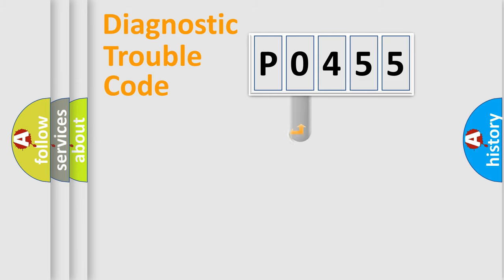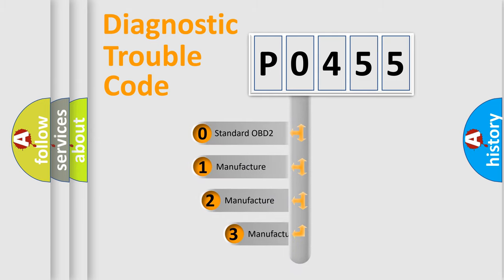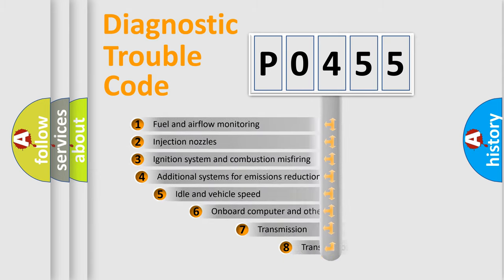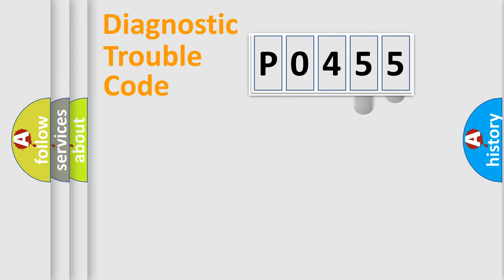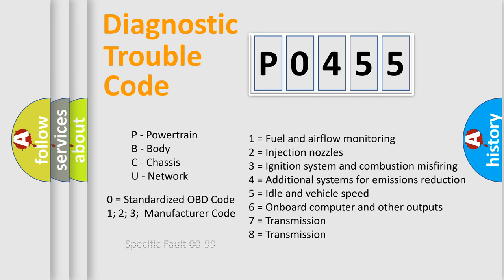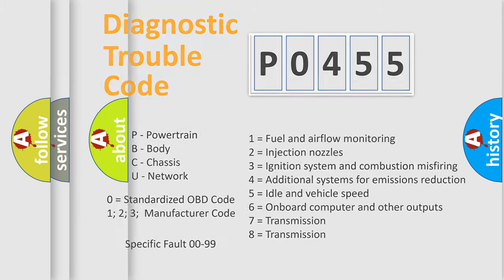This distribution is defined in the first character of the code. If the second character is expressed as zero, it is a standardized error. In the case of numbers 1, 2, or 3, it is a manufacturer-specific error. The third character specifies a subset of errors. The distribution shown is valid only for the standardized DTC code. Only the last two characters define the specific fault of the group. This division is valid only if the second character is expressed by the number zero.